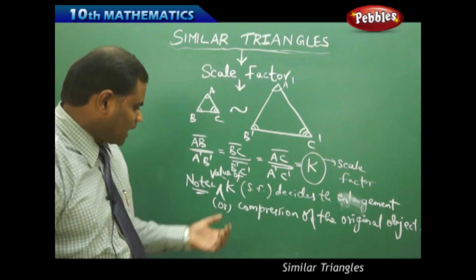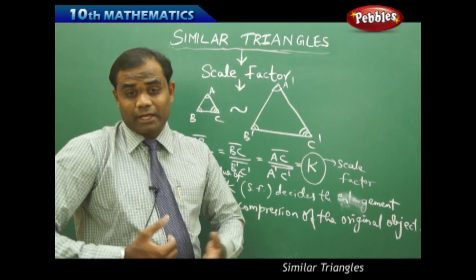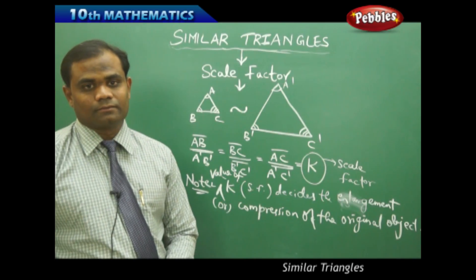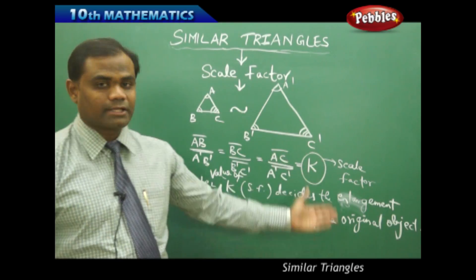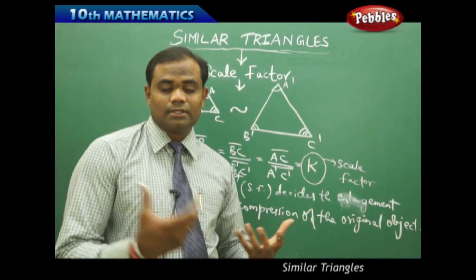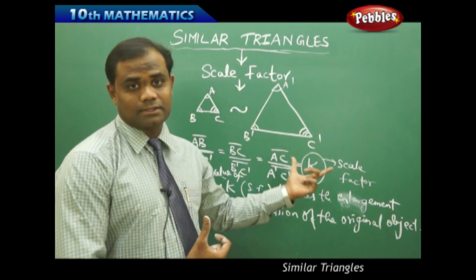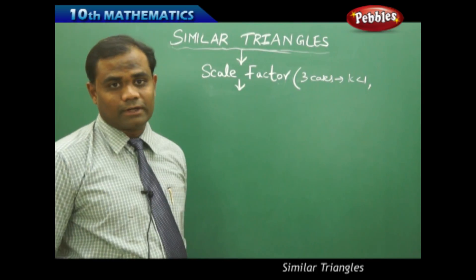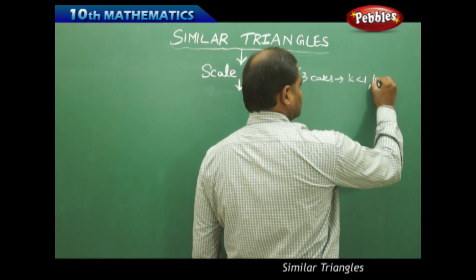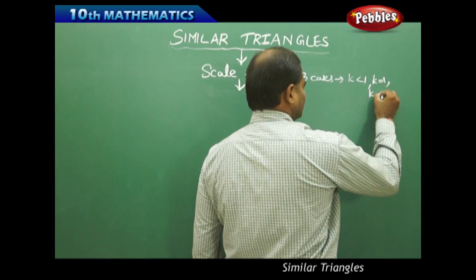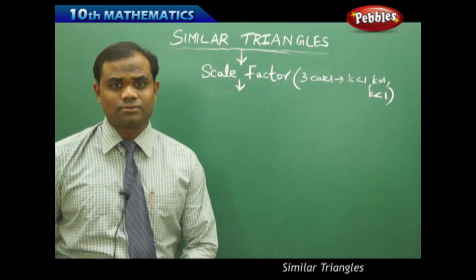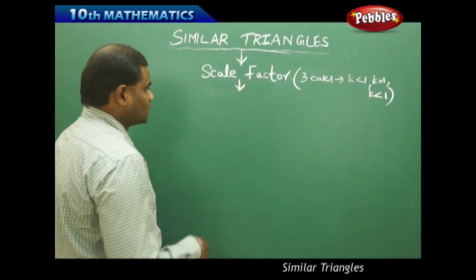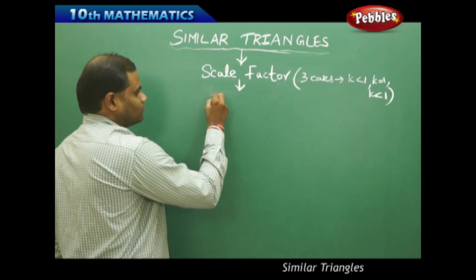Now let's consider what happens when K is greater than one, K equal to one, or K less than one. We'll include three cases through which we understand the scale factor connected with the size of the two objects in similarity of two triangles: Case 1 — K greater than one; Case 2 — K equal to one; Case 3 — K less than one.